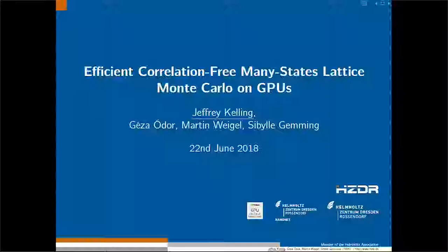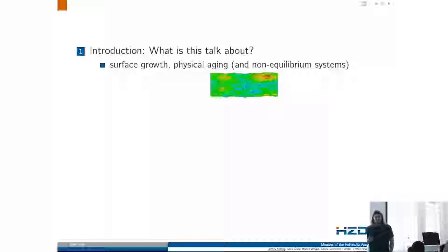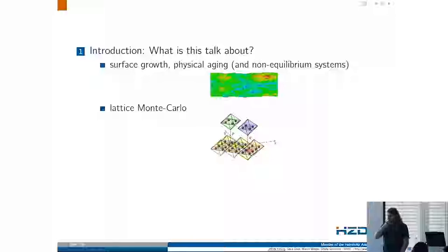My talk is about Monte Carlo simulations on GPU. First a short overview: I will talk about surface growth and physical aging, which is the main application I am showing to you, though we also used it for different things like Potts models and spin systems. There is also another possible application which I will hint at. Then I will talk about lattice Monte Carlo, the surface growth model, and the aging of this non-equilibrium system.